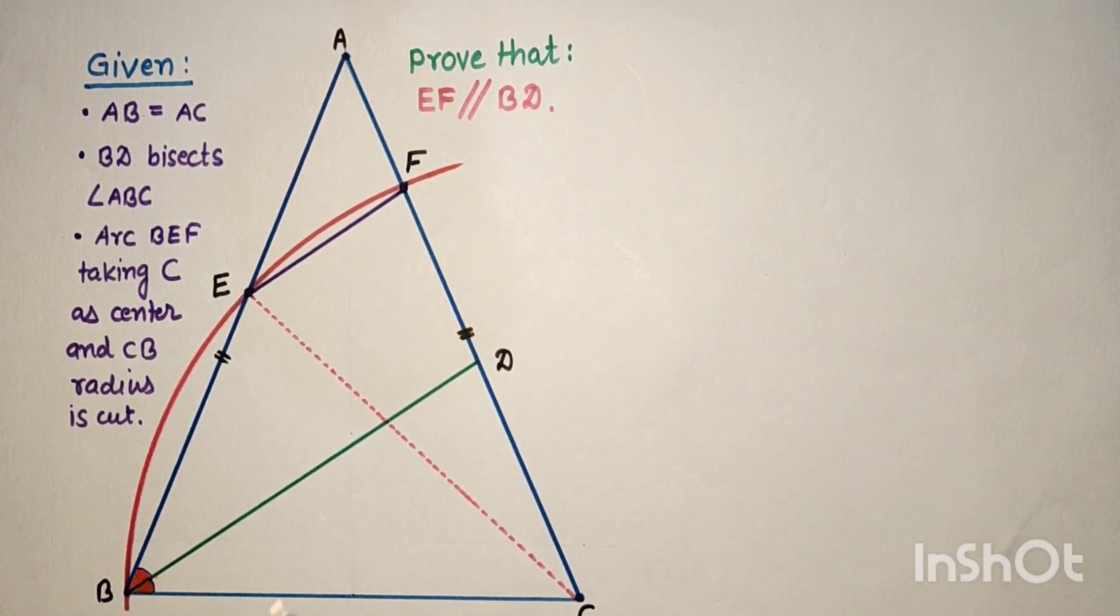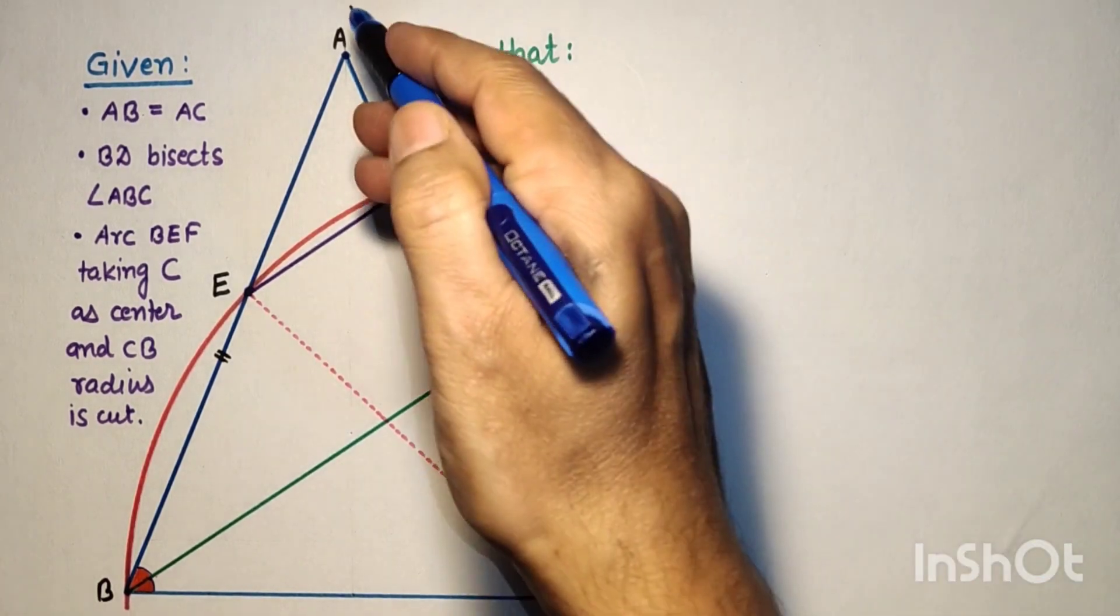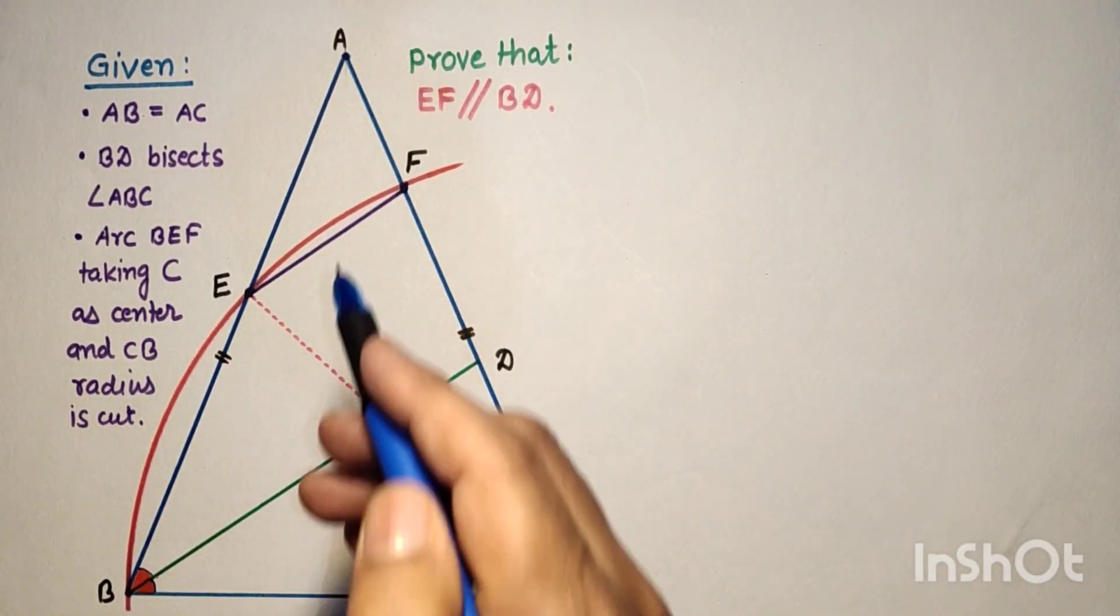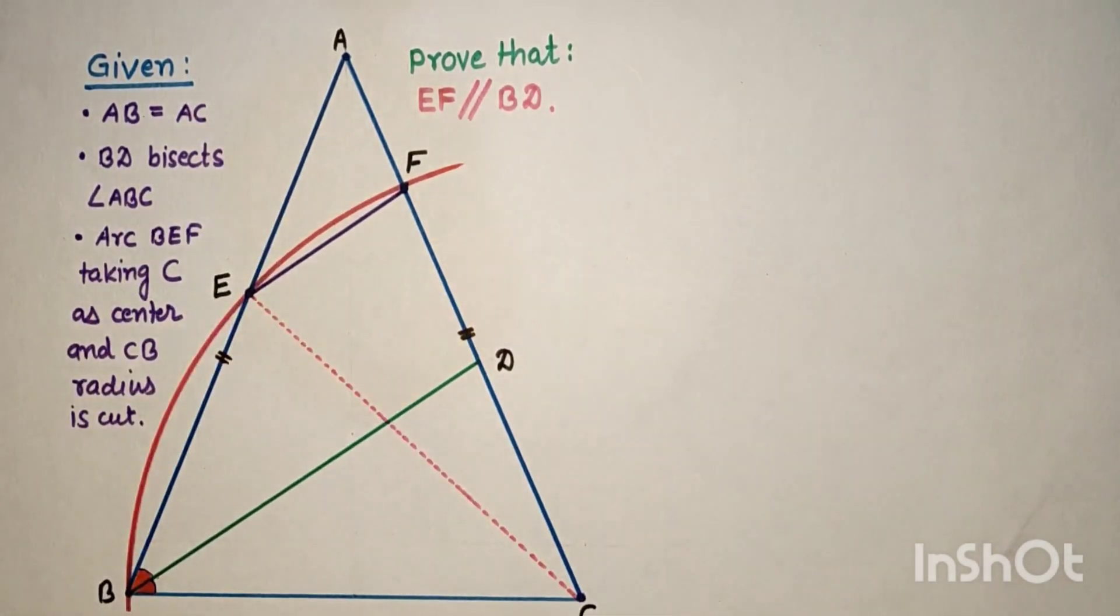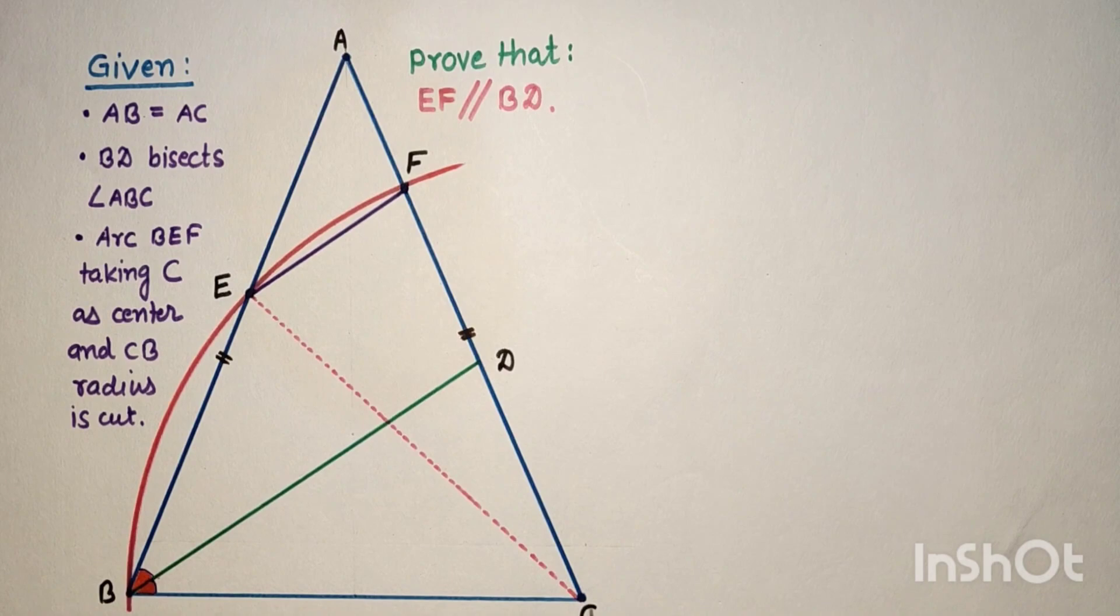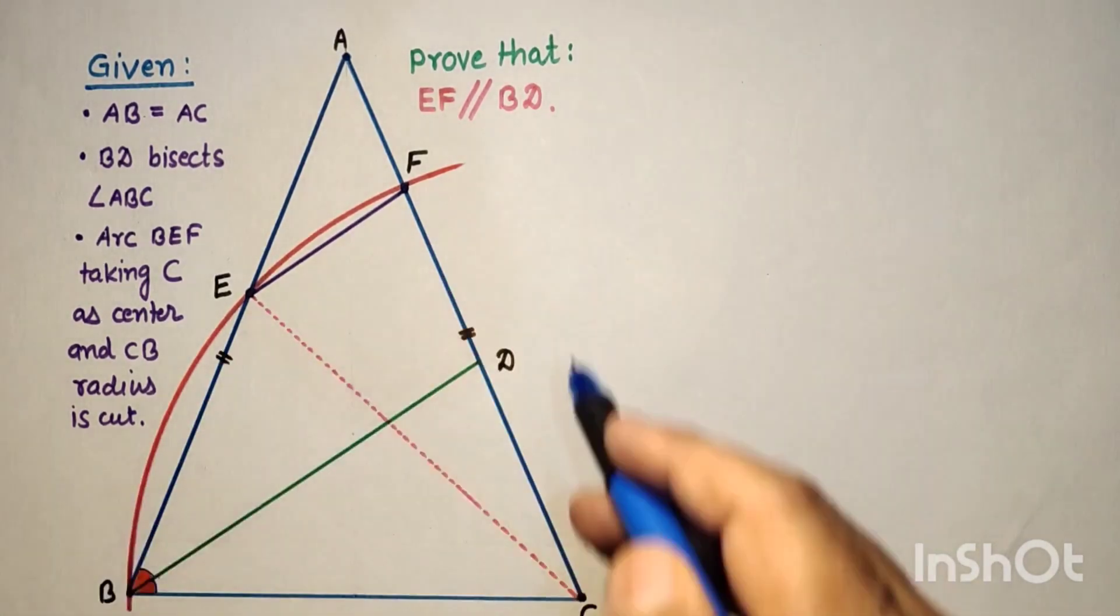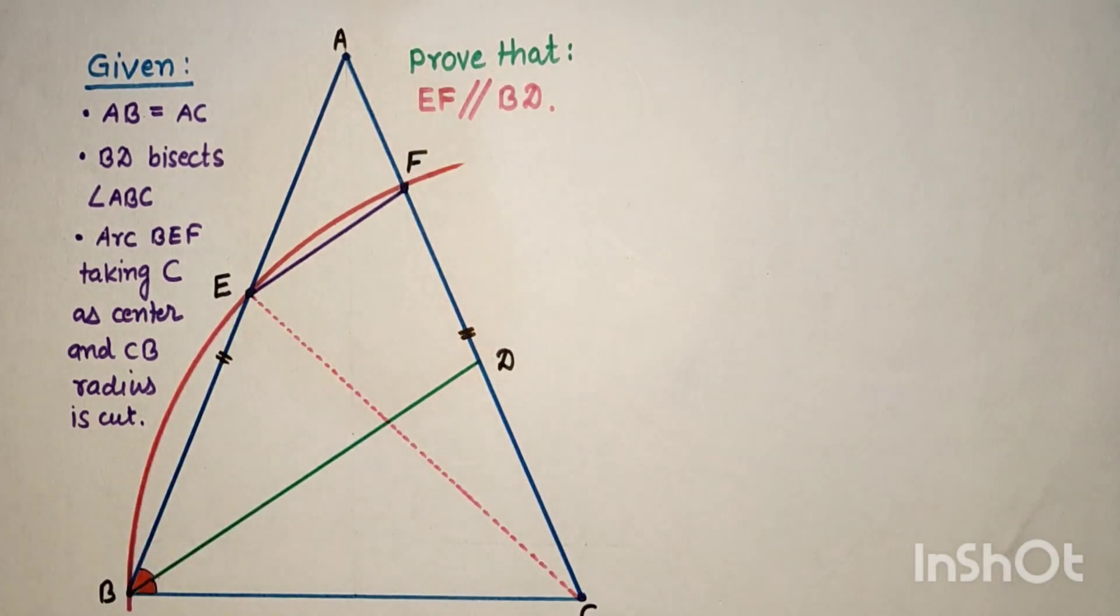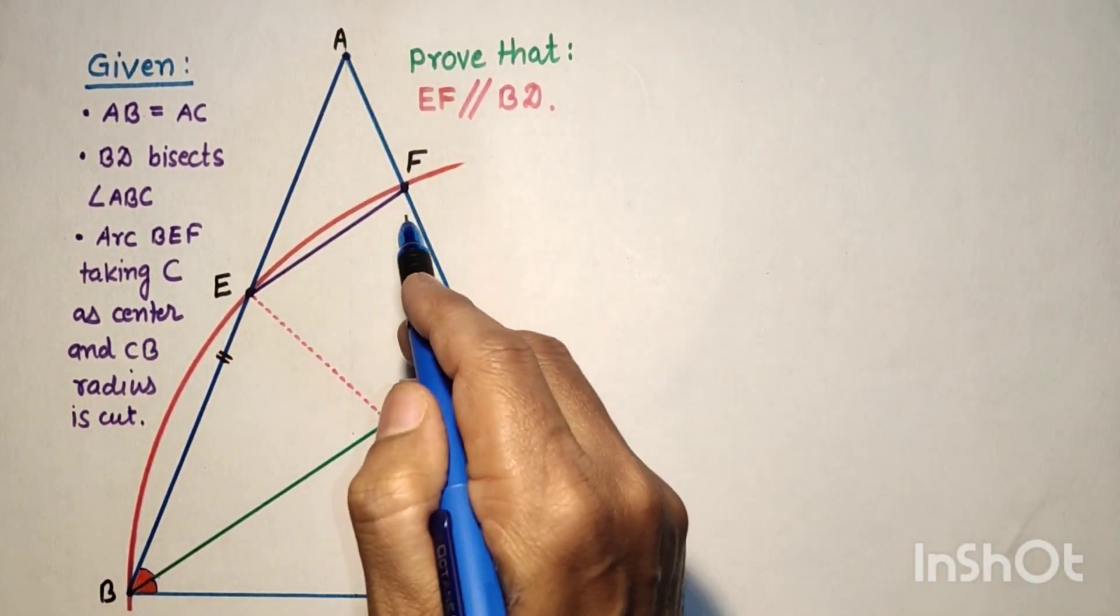In this question we are given that triangle ABC is an isosceles triangle such that AB is equal to AC. Taking C as center and CB as radius, arc BEF is drawn which intersects side AB at point E and side AC at point F.